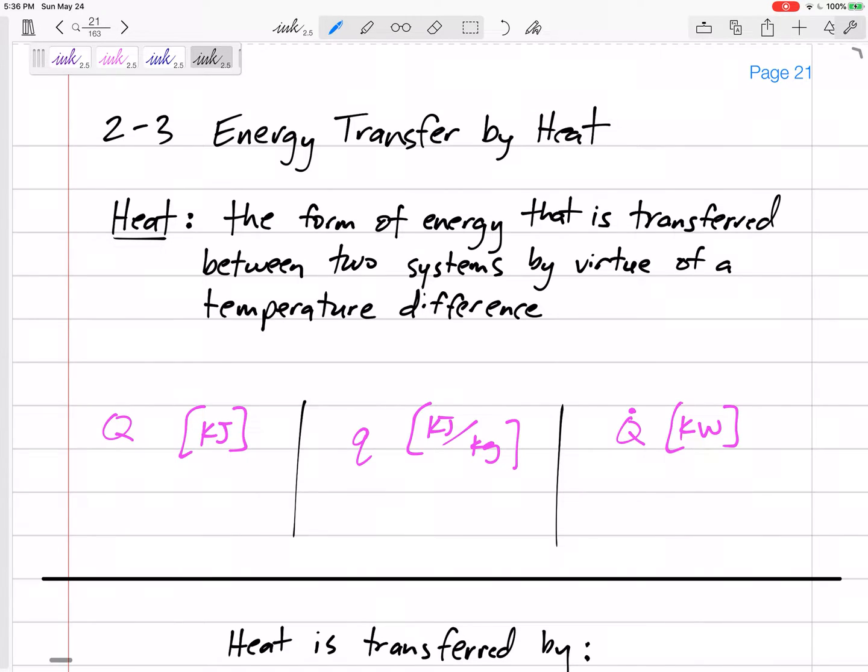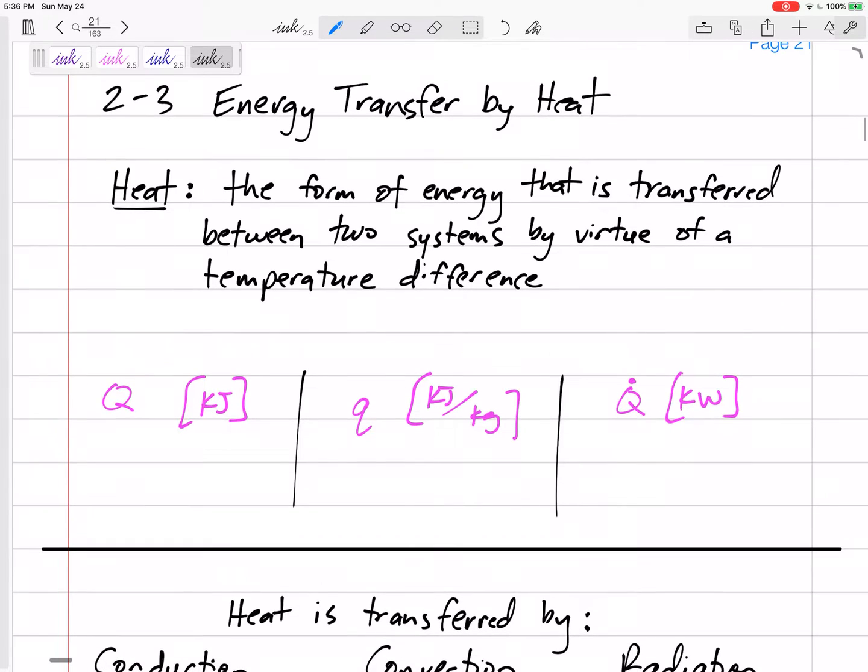So heat is the form of energy that's transferred between two systems because of a temperature difference. Heat is a transfer of thermal energy. It's really a transfer of thermal energy because of a temperature difference.